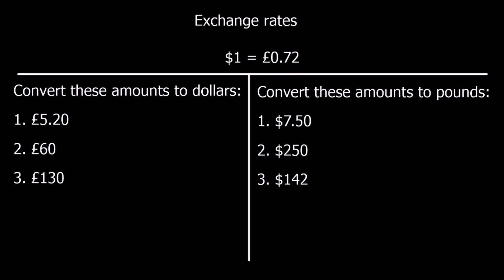In this example, the dollars and the pounds have switched round — we've got dollars on the left and pounds on the right. So this is our key number now: 0.72 is our exchange rate. If we go from dollars to pounds, that's forwards now, so dollars to pounds is times. Pounds back to dollars is backwards, so that's divide. So pounds to dollars — these ones are backwards — that's divide by the exchange rate.